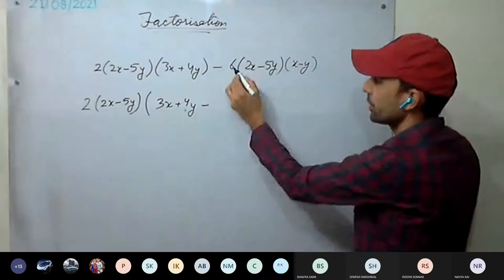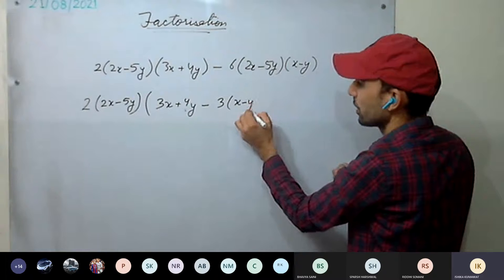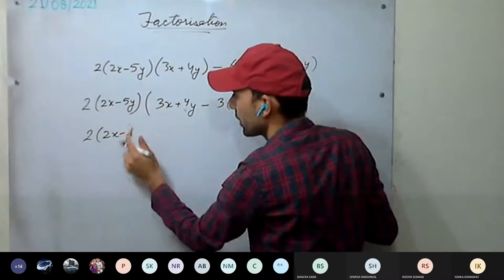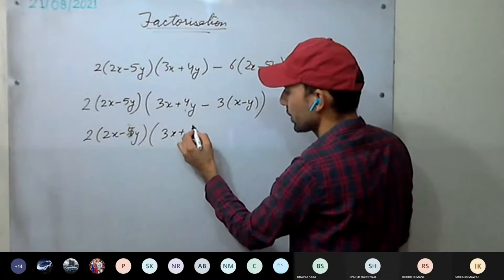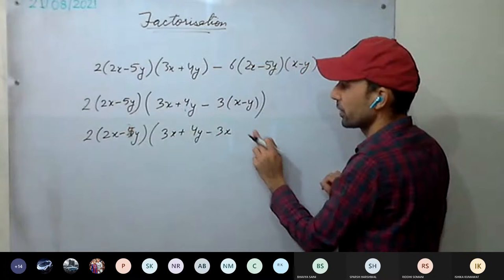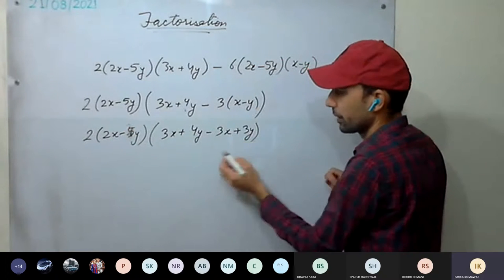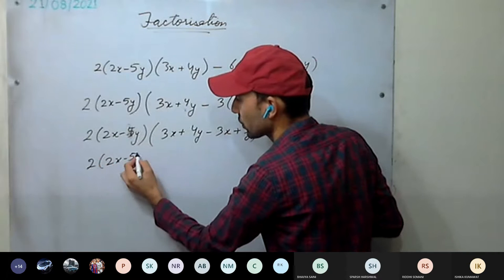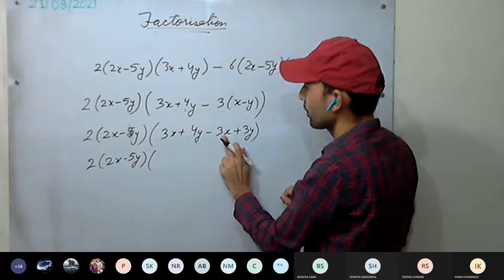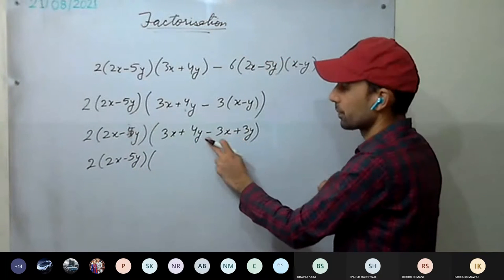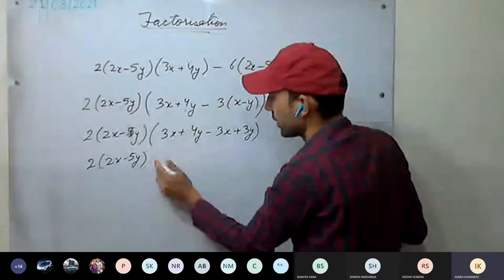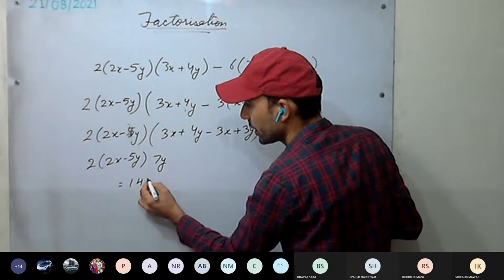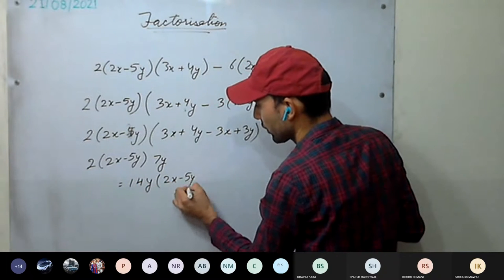Now solve inside the bracket: multiply out 2(2x−5y)(3x+4y) minus 3(2x−5y). Taking 2 and (2x−5y) as common factors: inside we have (3x+4y) and then minus 3·(−y)... working through: 3x − 3x cancels to 0, and 4y + 3y = 7y. So the final answer is 2(2x − 5y)(14y) or equivalently 14y·2·(2x−5y).